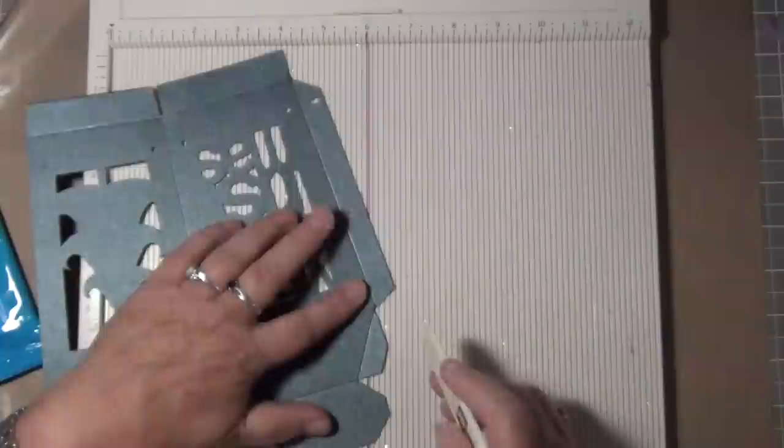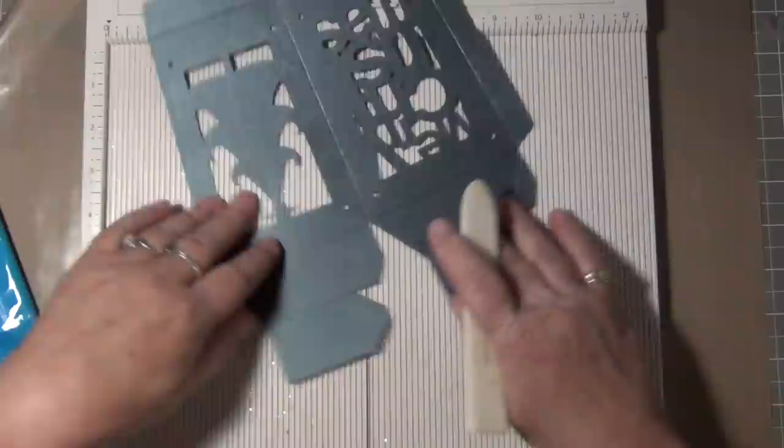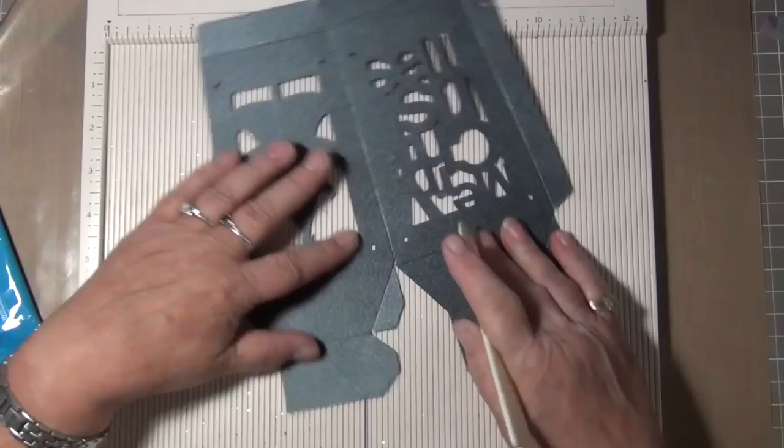And again, there is half inch. Always make sure that there is half inch and it is parallel so your score lines are going to be correct. Half inch and half inch again.